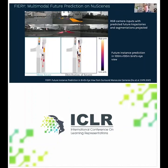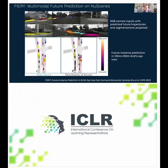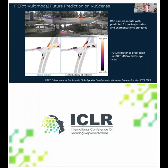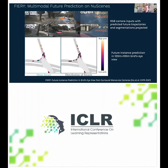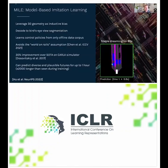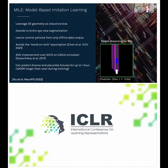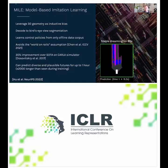We've been excited about this for a while. Our CVPR '21 paper, called Fiery, worked on the nuScenes dataset and aimed to predict the multimodal future evolution of driving in the scene. More recently, our work Mile at NeurIPS — model-based imitation learning — used 3D geometry as an inductive bias, built control policies from offline data corpora avoiding the world-on-rails assumption, improved state of the art on the Carla simulator, and was able to predict diverse and plausible futures for up to an hour. In the top-down view, the white is the ego vehicle, blue are imagined vehicles ahead, and the red traffic light then turns green.